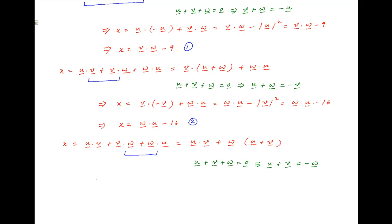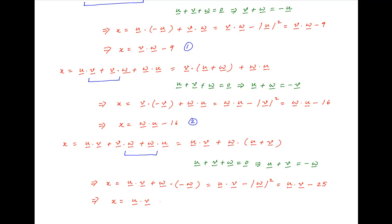Substituting this in the above expression for x, we get x is equal to u dot v plus w dot minus w, which is equal to u dot v minus the absolute value of vector w squared. Now, the absolute value of vector w is equal to 5, and therefore the value of x is equal to u dot v minus 25. Let's call this result 3.